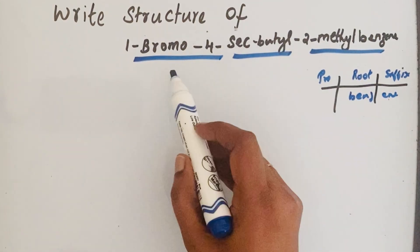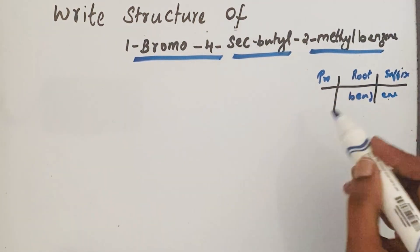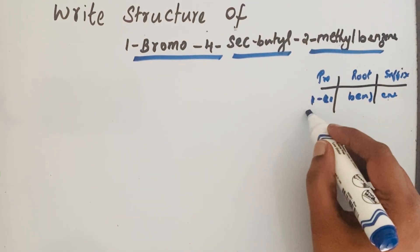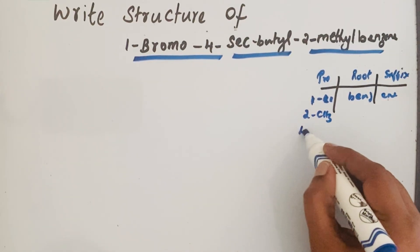Now if you come to the prefix, we have three prefixes here: 1-bromo, 4-sec-butyl, 2-methyl. So in the first position we have bromine, in the second position we have methyl group CH3, and in the fourth position we have secondary butyl.